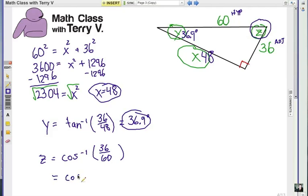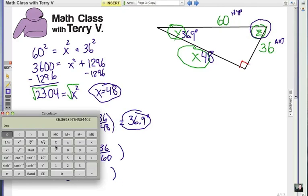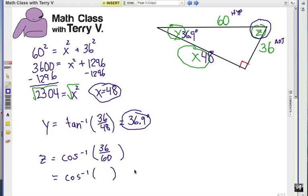of 36 over 60. Alright, cosine inverse of, let's divide that out. We've got 36 divided by 60, .6. Now we're going to do the inverse cosine of that. 53.1, 53.1 degrees.